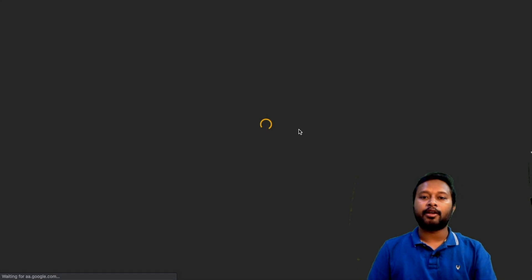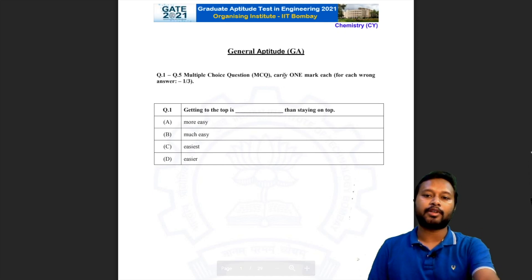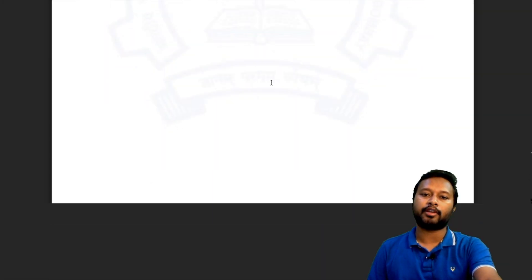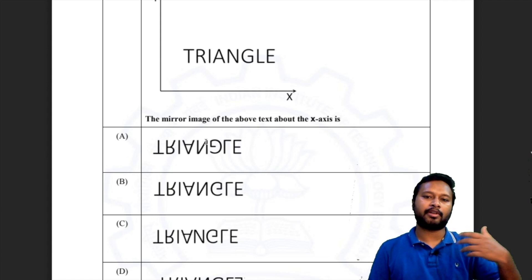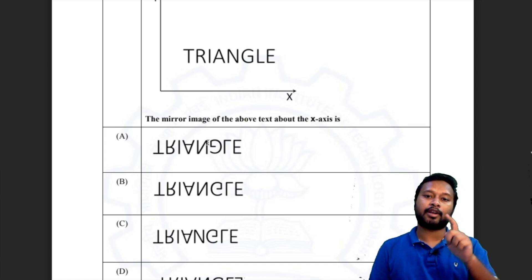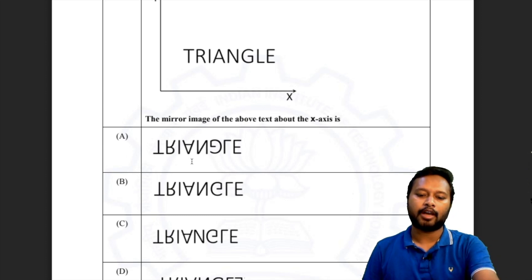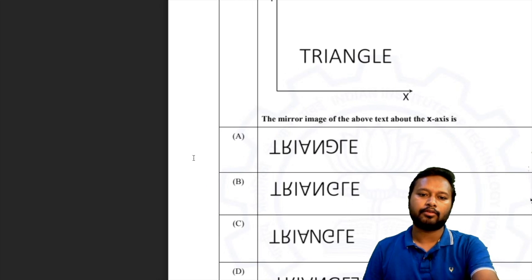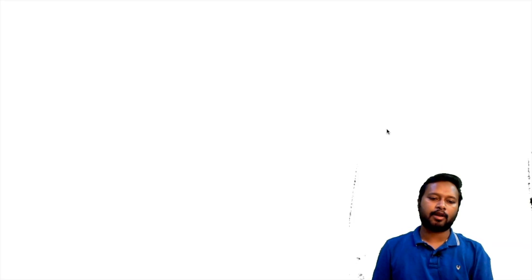Now, it might happen that the question numbering is not equivalent to the numbering in your response sheet — that is obvious. Question number two in the official paper might be question number six or seven in your response sheet. So make sure you are not matching answers by question numbers. First, note down the questions from your response sheet and number them according to the correct official question paper, then match the answers in the answer key.